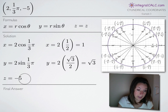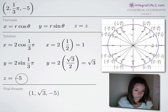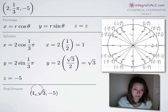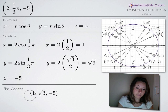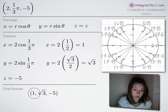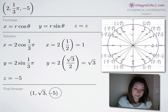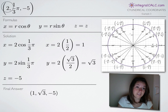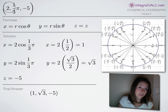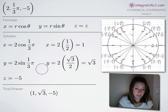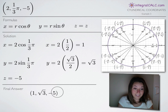So now we have x, y, and z. To find our rectangular coordinate, we just put the three together. Our rectangular coordinate is equal to 1, square root of 3, negative 5. This is exactly the same place in three-dimensional space as the cylindrical coordinate 2, pi over 3, negative 5 — just in rectangular coordinate form. That's all we have to do to find rectangular coordinates. I hope that helped, and I'll see you in the next problem.